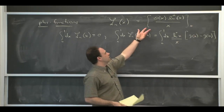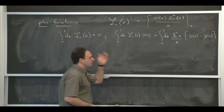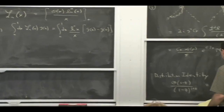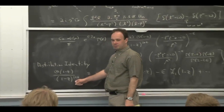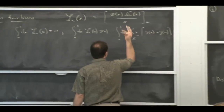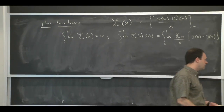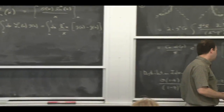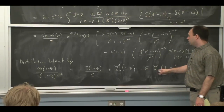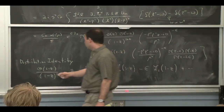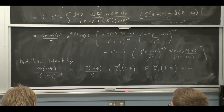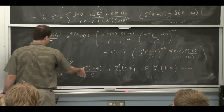So these things are like delta functions. The way you would derive this formula is: if z is away from 1, you can expand because there's no problem, and the plus function is just the regular function — it's only at 1 that something special is happening. The standard expansion is what you'd get if you took z away from 1. To see what's happening at z equals 1, you just integrate both sides from 0 to 1, and that's how you derive the coefficient of the delta function.